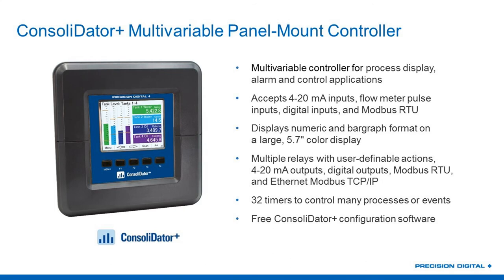So what is a Consolidator Plus multivariable panel mount controller? You can see it on screen here showing four process variables in color. You can bring in up to 28 4-to-20 milliamp signals, and get a variety of mixes of analog inputs, pulse inputs, relay outputs, and 4-to-20 milliamp outputs. All of those analog inputs and outputs come with their own isolated 24-volt DC power supply, which allows you to have all loops connected to your Consolidator Plus on their own isolated networks.